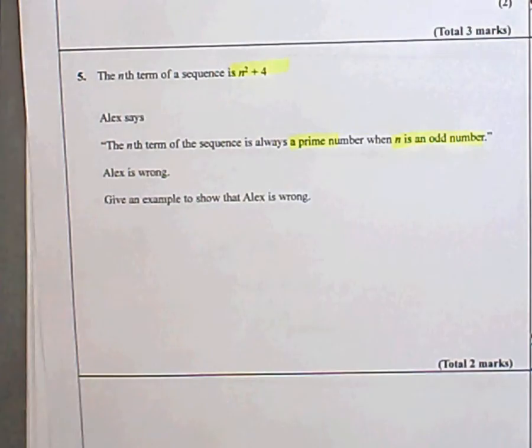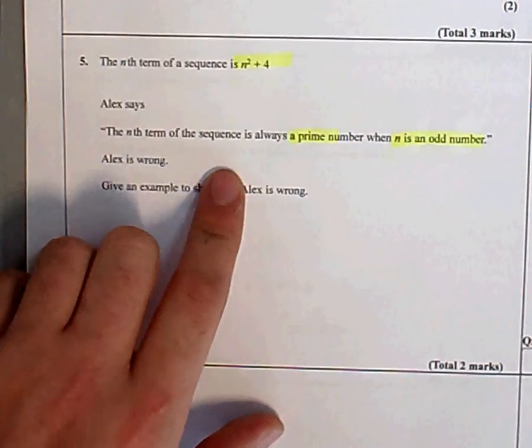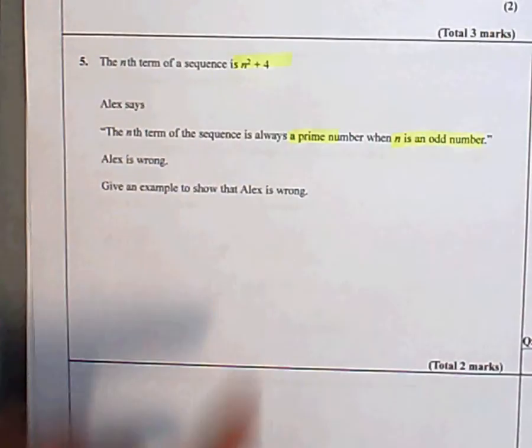They're asking you to show it's not going to be that every time. So you're looking for different numbers—you're going to substitute different odd numbers into this formula and come up with one that's not a prime number. When you've done that, you've showed that Alex is wrong.